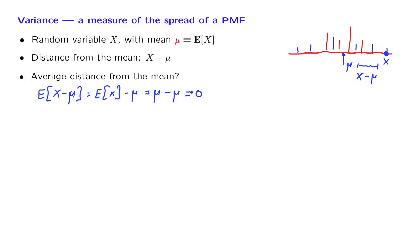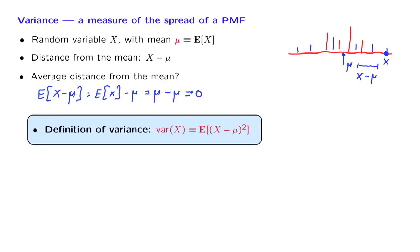What we really want is the average absolute value of the distance from the mean, or something with this flavor. Mathematically, it turns out that the average of the squared distance from the mean is a better-behaved mathematical object. This quantity is called the variance, and it is defined as the expected value of the squared distance from the mean. Notably, the variance is always non-negative, because it is the expected value of non-negative quantities.